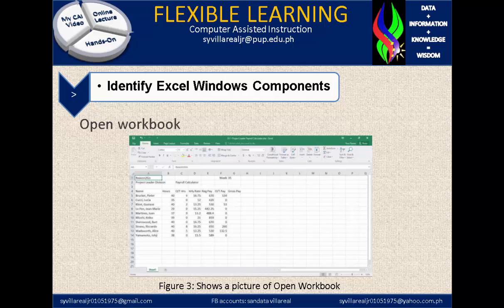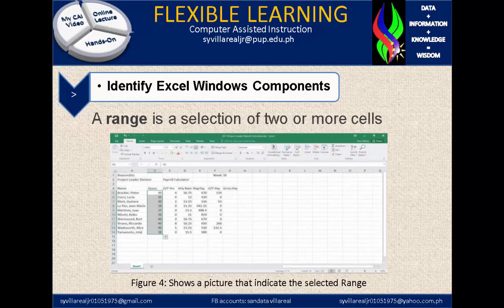If you open a workbook, this image might represent the spreadsheet as an open workbook. In figure 4, there is a picture that indicates the selected range. A range is a selection of two or more cells. The selected range are those active cells.